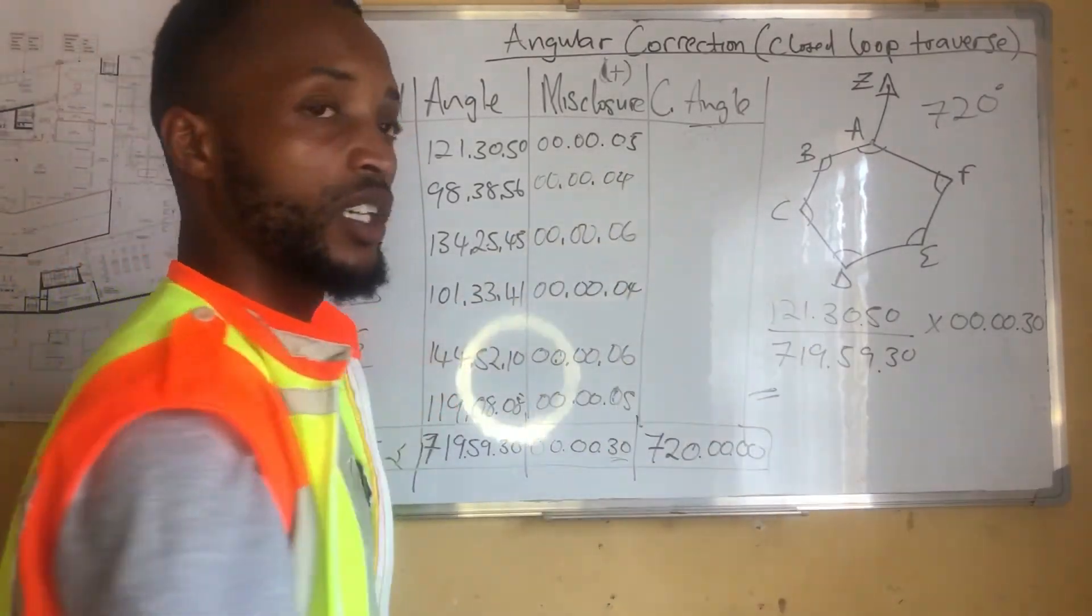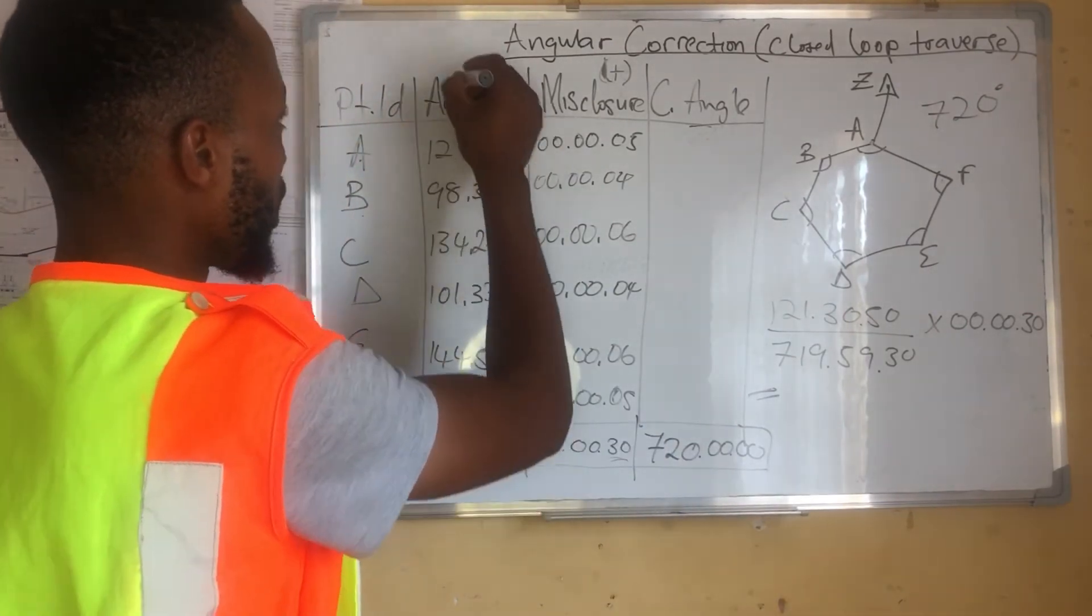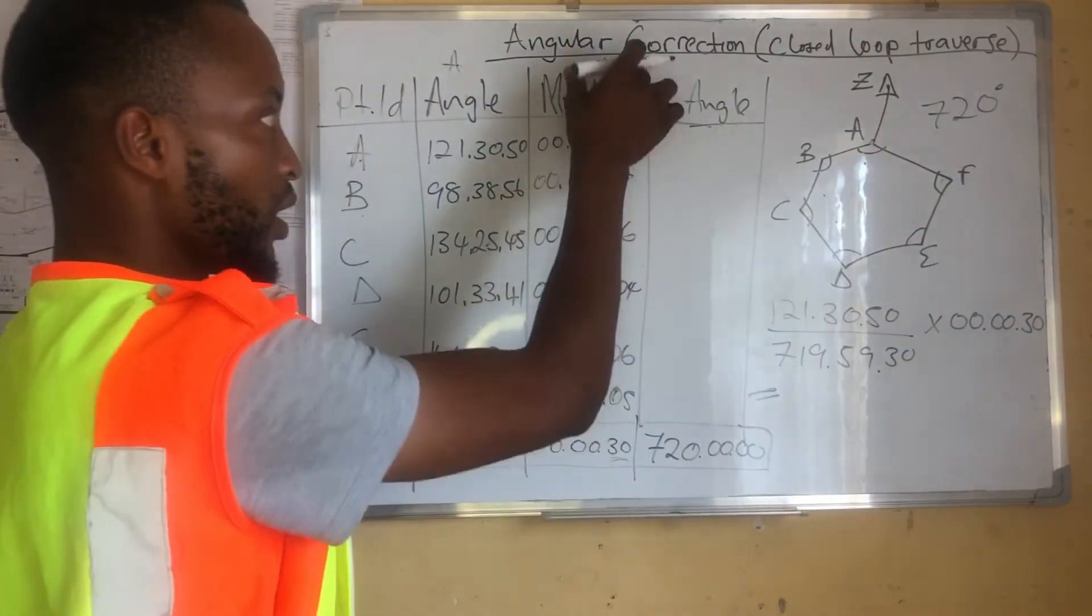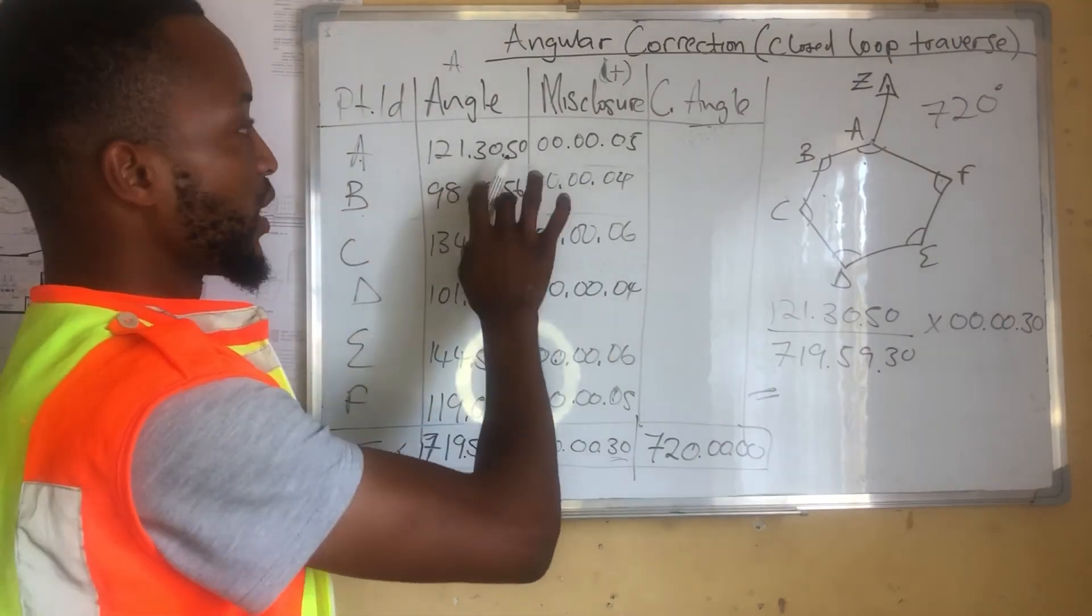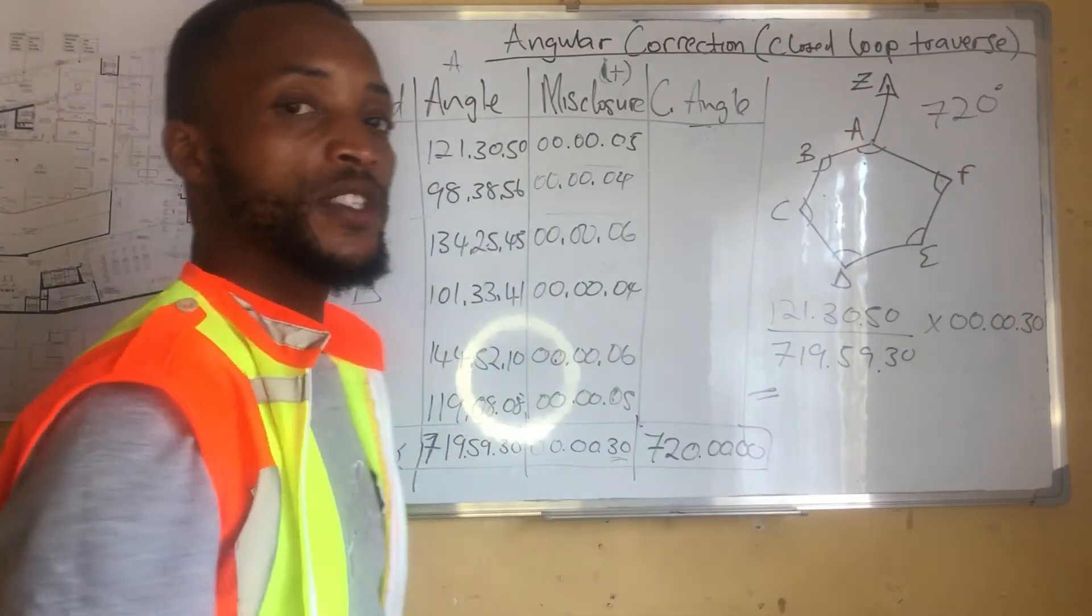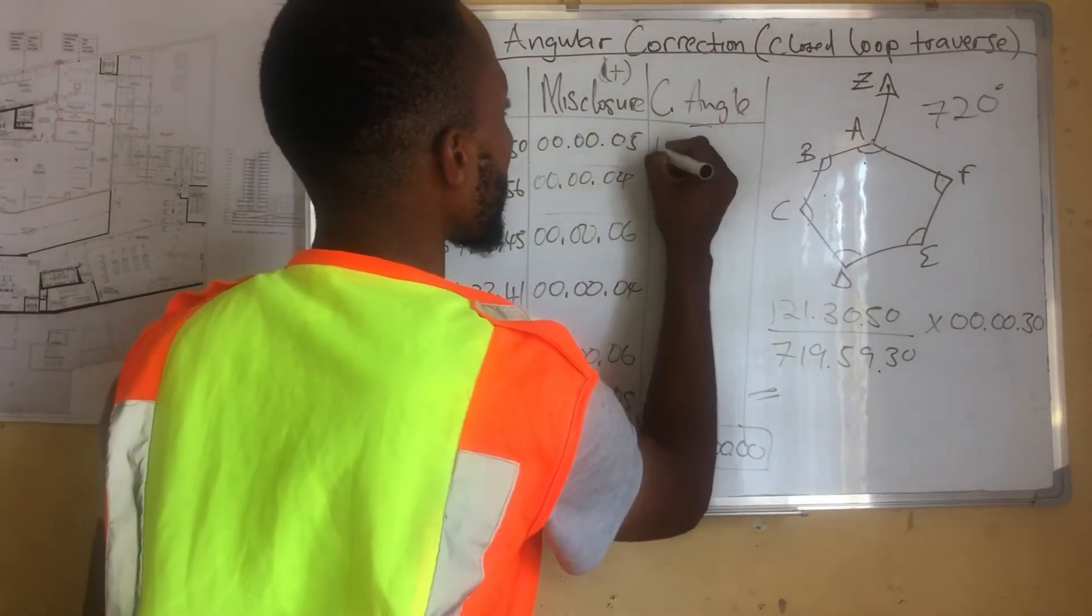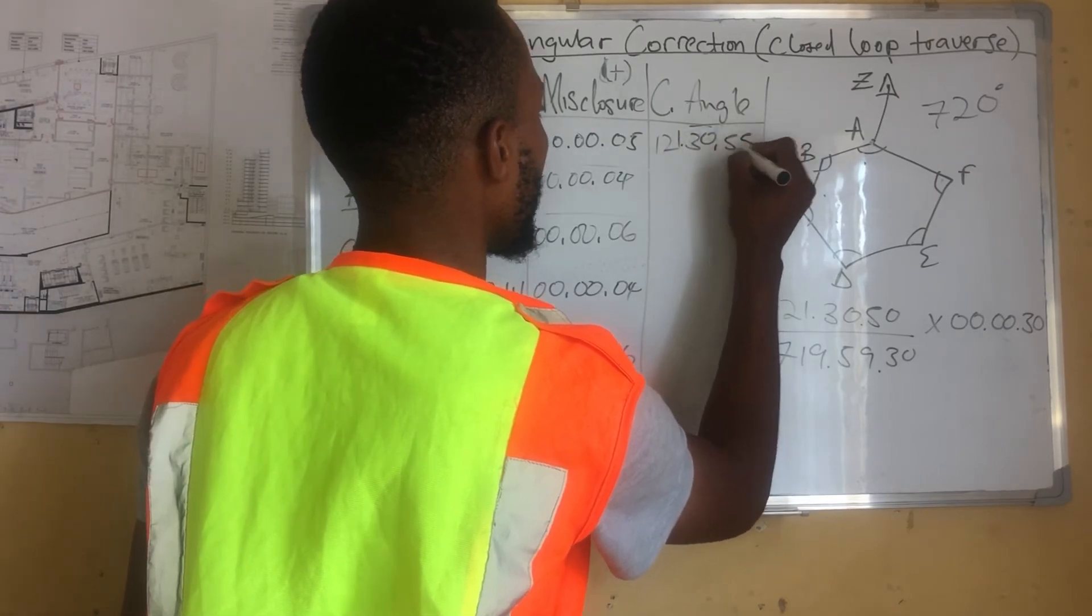From there, we are now going to add our angles, the already existing angles that we were given here. We will add with the misclosures. It's 121 degrees, 30 minutes, 50 seconds. We add with the 5 seconds. In this case it's 121, 30, 55.